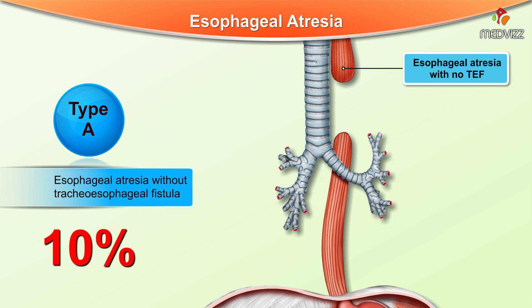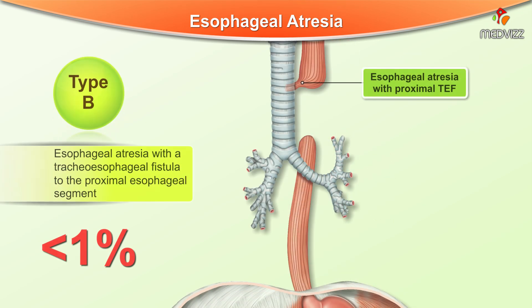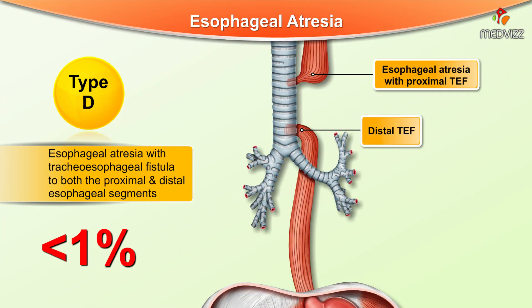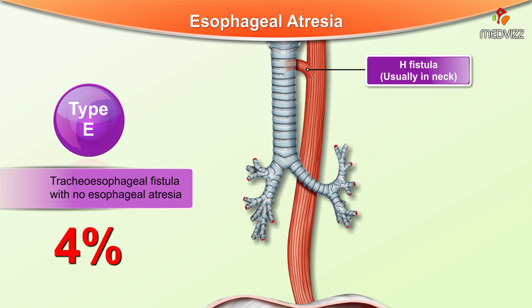Type A is esophageal atresia without tracheoesophageal fistula. Type B is esophageal atresia with a tracheoesophageal fistula to the proximal esophageal segment. Type C is esophageal atresia with tracheoesophageal fistula to the distal esophageal segment, which is the most common variant. Type D is esophageal atresia with tracheoesophageal fistula to both the proximal and distal segments. Type E is tracheoesophageal fistula with no esophageal atresia.